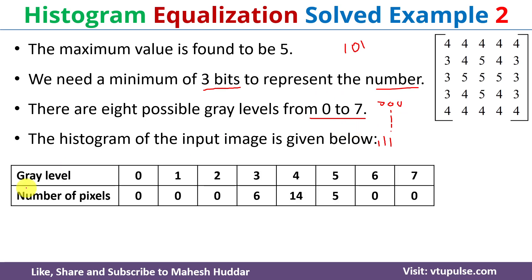The histogram of the input image is given below. The number of pixels for gray level 0 is 0, because we don't have any 0s in the input image. Similarly, for gray levels 1 and 2, the count is also 0. For gray level 3, we have 6 pixels — that is 1, 2, 3, 4, 5, and 6.